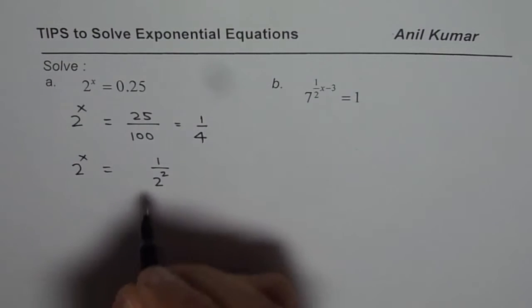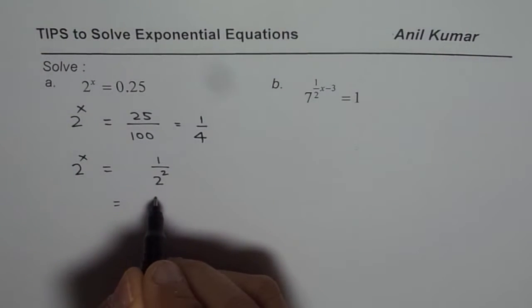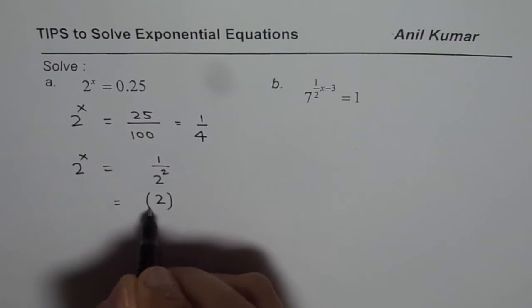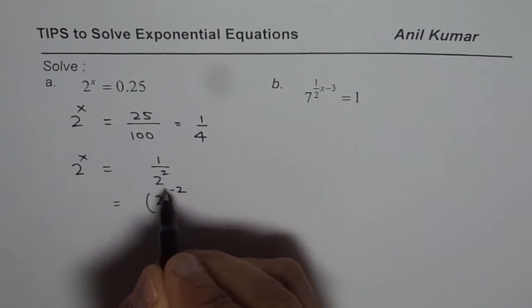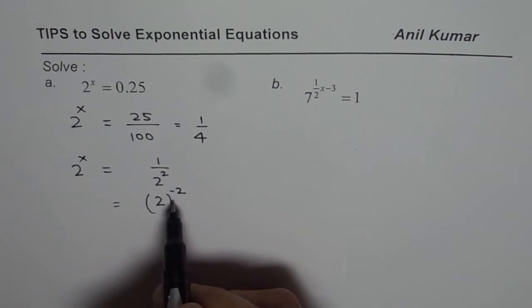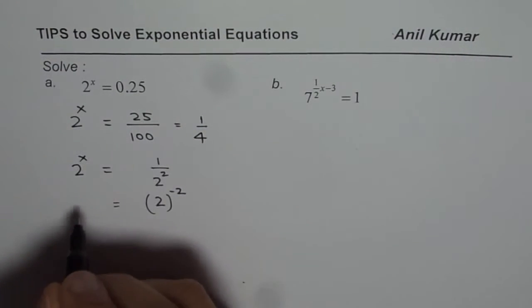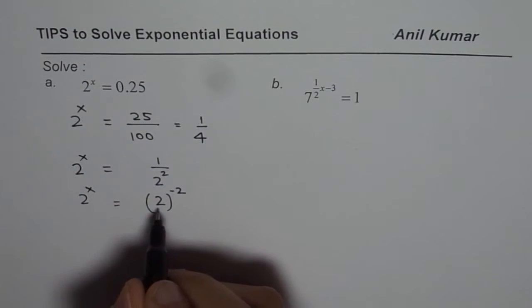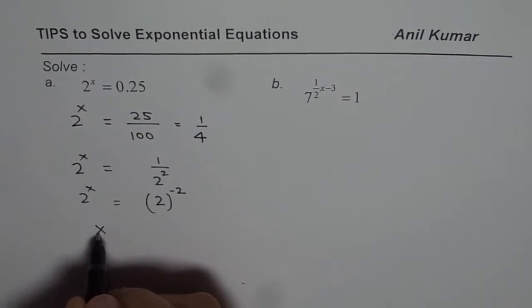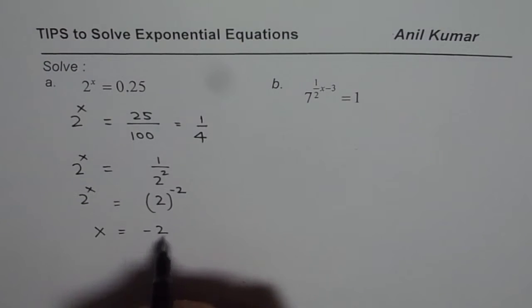Almost the same base, but we can write this as 2^-2. With the negative exponent, you make it a reciprocal. So we have 2^x = 2^-2, and the solution is x = -2.